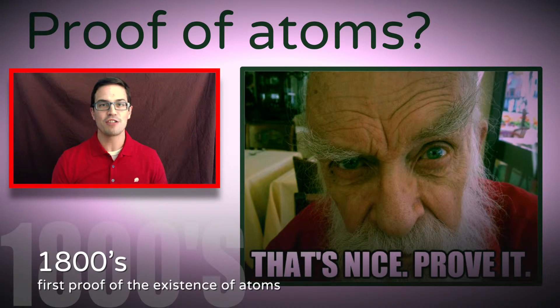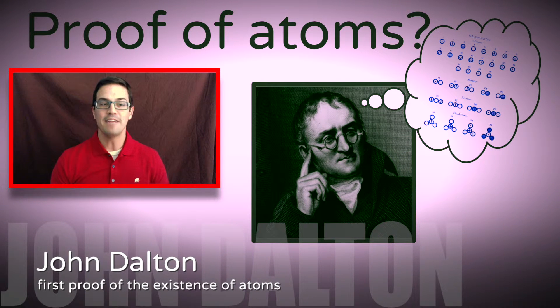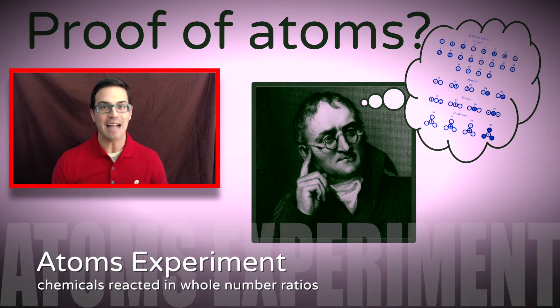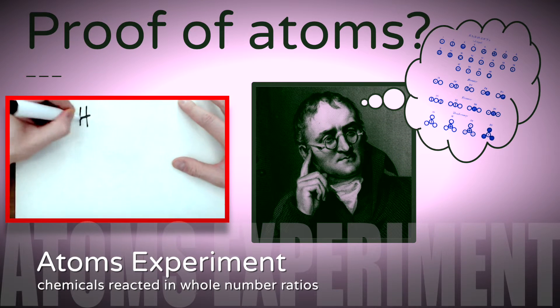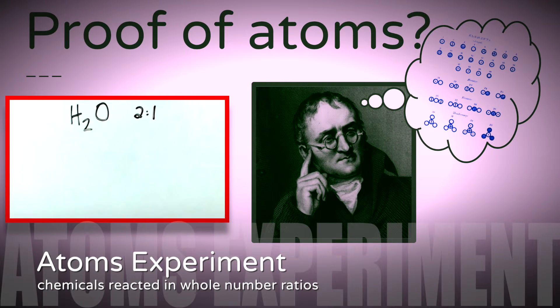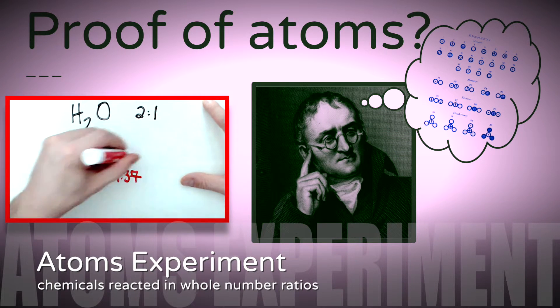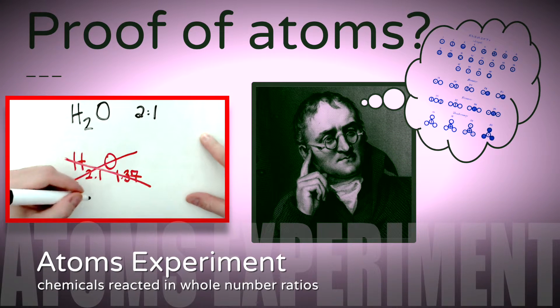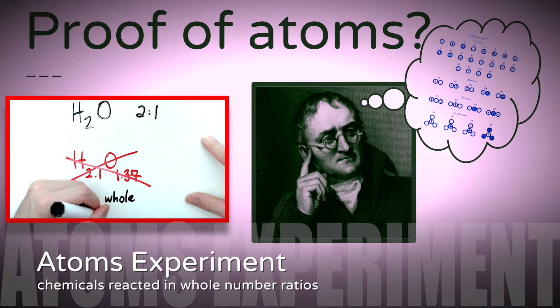It wasn't until the 1800s that we actually got proof that atoms existed. A scientist did an experiment and found that chemicals always reacted in whole number ratios. For example, if you had hydrogen and you mixed it with oxygen, it always formed a whole number ratio of H2O. It was never H2.1O or 1.37. There were never any fractions. It was always H2O.